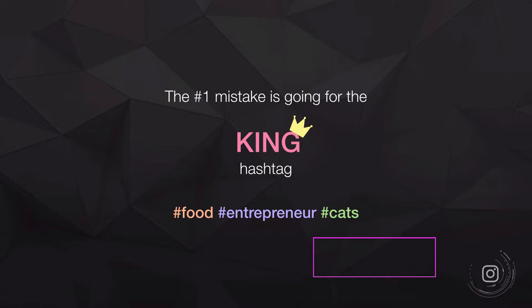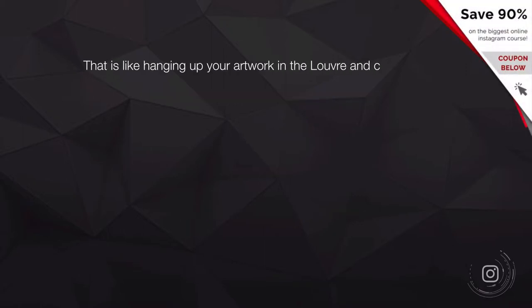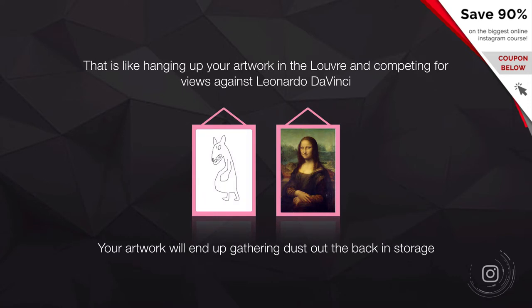King hashtags — like hashtag food, hashtag entrepreneur, hashtag cats — are the most popular museums. To stand out in an exceedingly popular museum is really tough. It's basically like hanging your artwork in the Louvre and competing for views against the Mona Lisa. You're going to end up gathering dust in storage and not getting the engagement or views you need.